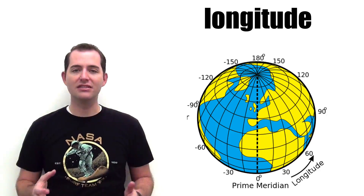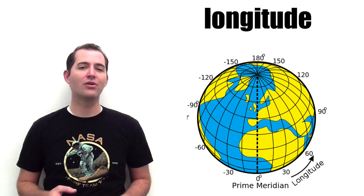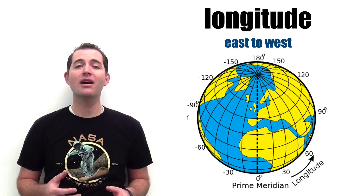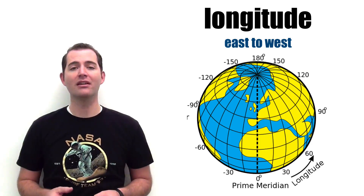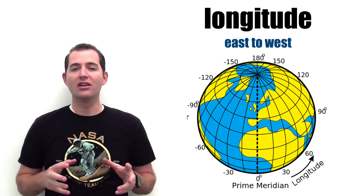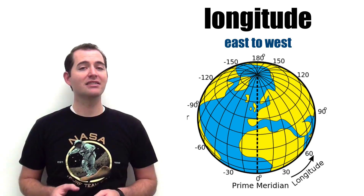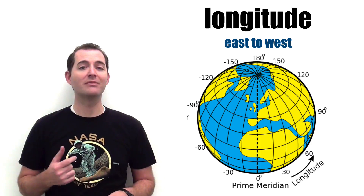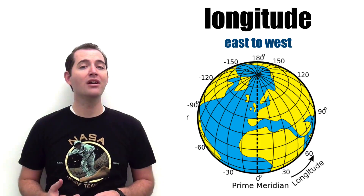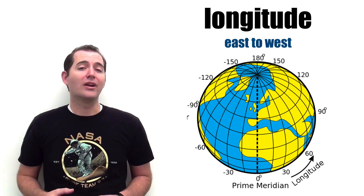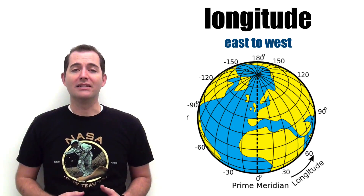Longitude is a geographic coordinate that is used to describe the east to west location of a point on the surface of the earth. Longitude is usually expressed in degrees and represented by imaginary lines that run from the North Pole through the South Pole. These lines are also known as meridians.